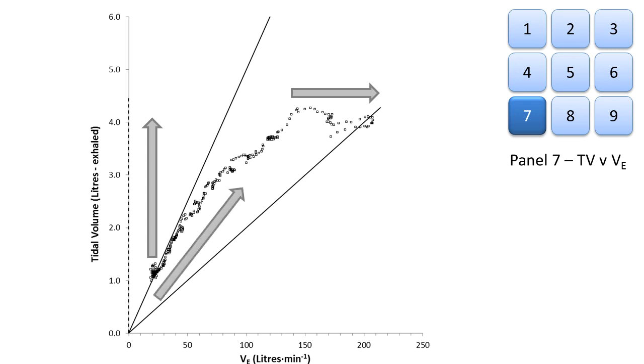Instead, if we see data points moving directly out of the origin of this graph, this is an example where ventilation is increasing as a result of just tidal volume and no breathing frequency increases.